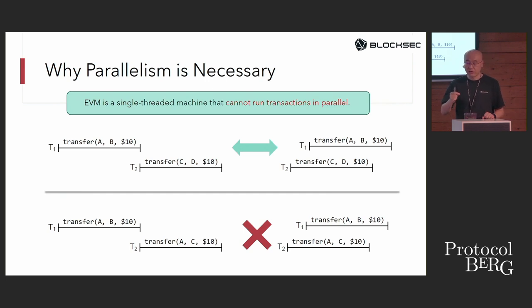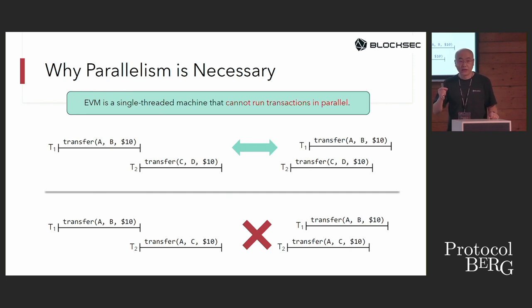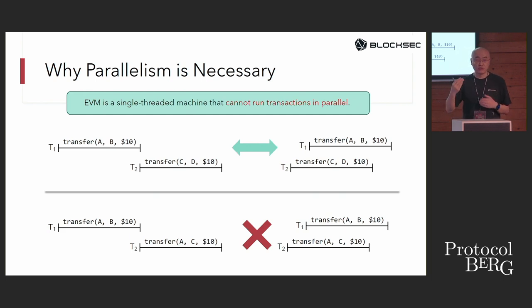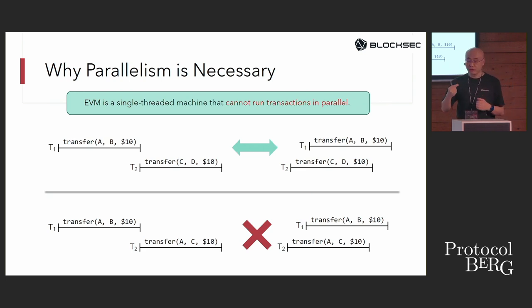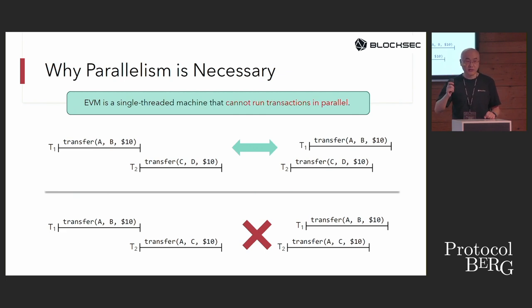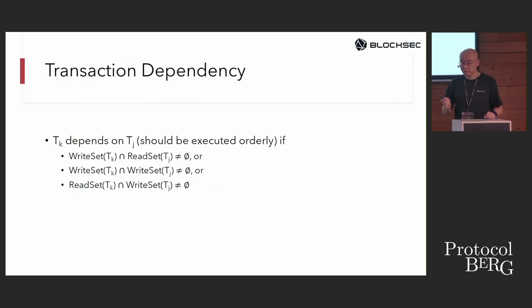Suppose we have two transactions: T1 transfers tokens from account A to B, and T2 transfers tokens from account C to D. These two transactions can execute in parallel because they have no state dependencies — the state changes in T1 do not affect the state in T2. But if T2 transfers tokens from account A to C, they cannot be executed in parallel.